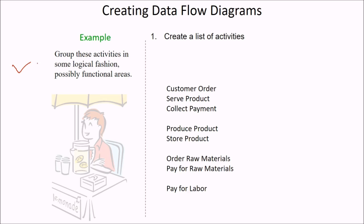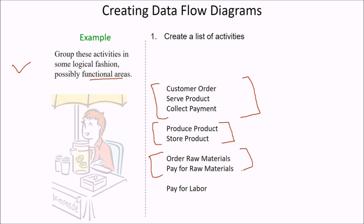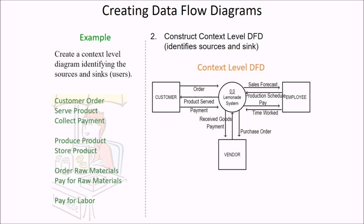We have to group these activities in a logical fashion and see what functions they perform, combining them with respect to their functional areas. One functional area includes customer order, serve product, and collect payment. Then product storage — produce and store — order and pay for raw materials, and pay for labor. Now we create a context level diagram identifying the source and sink. This is the construction of the context level DFD which identifies the source and sink, and there can be three of them.